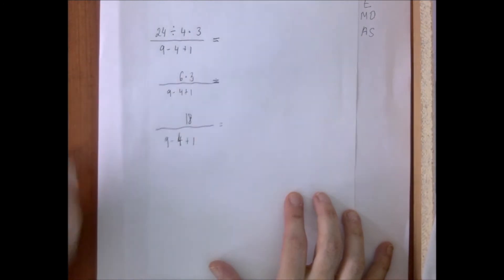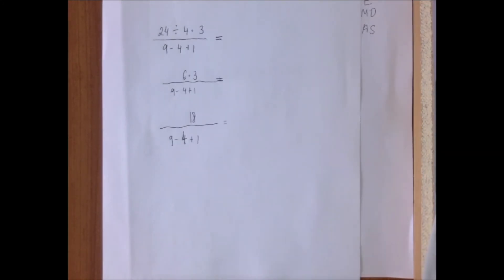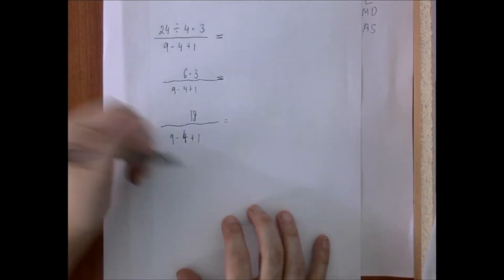Now let's do the number in the denominator. Now for the operations downstairs, again, we go left to right.